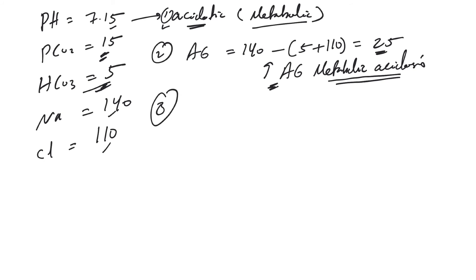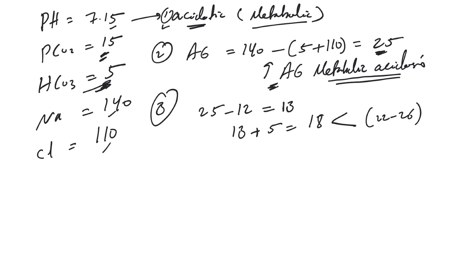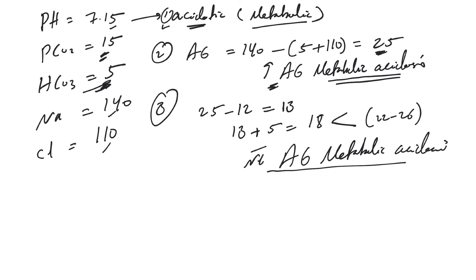Now the excess anion gap: 25 minus 12 equals 13. Adding 13 to the measured bicarb of 5 equals 18. Since 18 is less than normal bicarb of 22 to 26, that means there is also normal anion gap metabolic acidosis — the second disorder. This patient has both increased anion gap metabolic acidosis and normal anion gap metabolic acidosis. This patient is recovering from DKA — you'll see that the anion gap closes, but bicarb remains low, mainly due to failure of regenerating bicarb from the lost ketoacids, which usually improves on its own eventually.